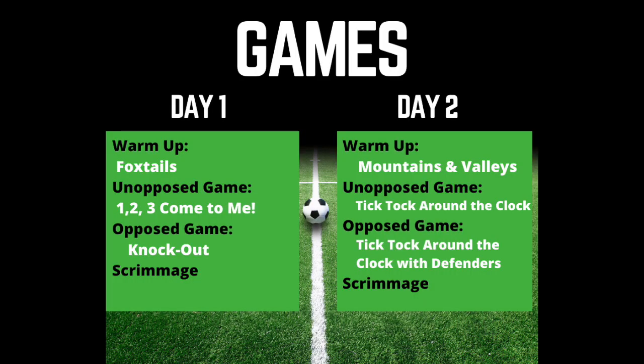Now let's take a look at this week's games. For day one, your warm-up is Foxtails. The unopposed game is 1-2-3 Come to Me, and the opposed game is Knockout, followed by your 25-minute scrimmage. For day two, you'll warm up with Mountains and Valleys. The unopposed game is Tick Tock Around the Clock, and the opposed game is Tick Tock Around the Clock with defenders, ending with your 25-minute scrimmage.